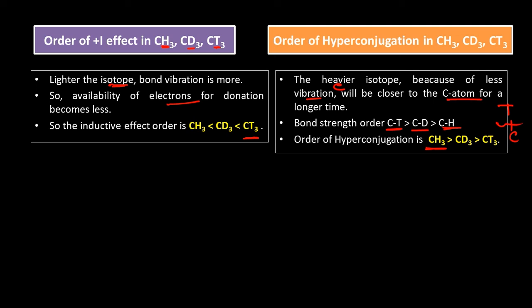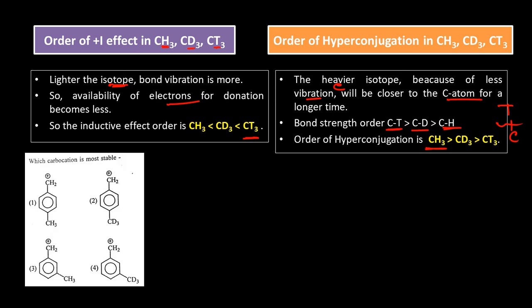The answer is that the order of hyperconjugation and +I effect for the three groups CH3, CD3, and CT3 are not the same — they are opposite. Now let's discuss a problem that will help us understand this difference in order. The problem asks which carbocation is most stable, involving benzyl carbocations with CH3 and CD3 groups at different positions.